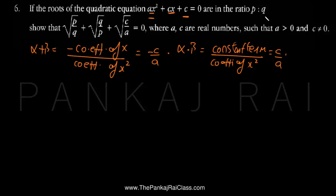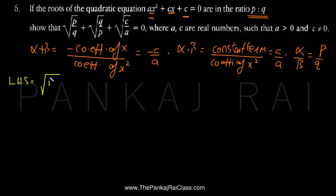We have also been given that the roots are in the ratio P:Q, so alpha by beta equals P:Q. These are the given conditions, and by using these we have to prove the result. So the left-hand side is given to us as the square root of P/Q plus the square root of Q/P plus the square root of C/A.